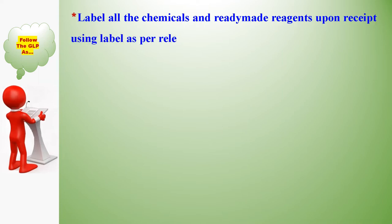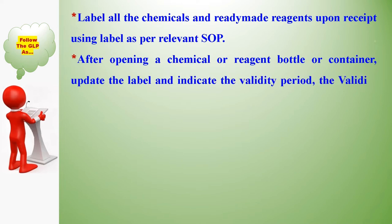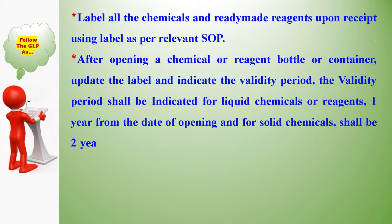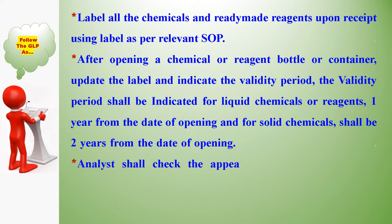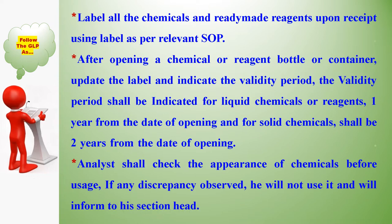Label all chemicals and ready-made reagents upon receipt using labels as per the relevant SOP. After opening a chemical or reagent bottle or container, update the label and indicate the validity period. The validity period shall be one year from the date of opening for liquid chemicals or reagents, and two years for solid chemicals. Analysts shall check the appearance of chemicals before usage; if any discrepancy is observed, do not use them and inform the section head.